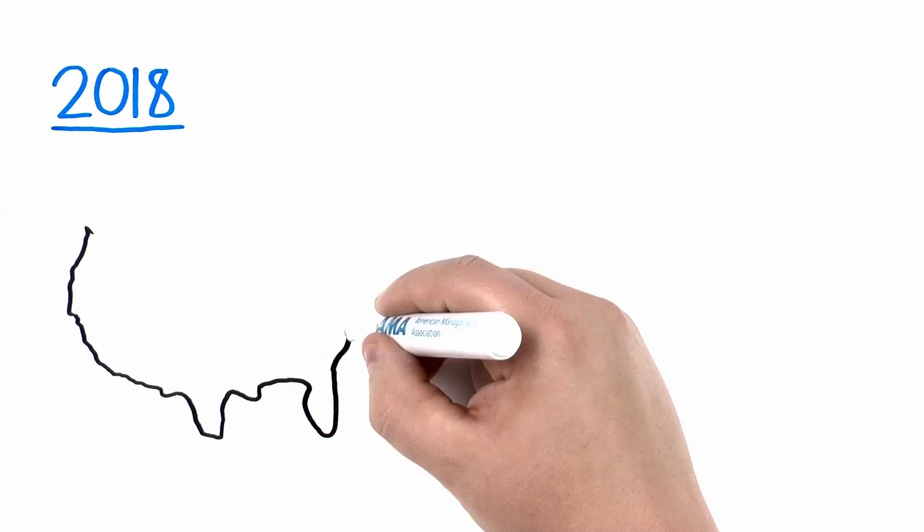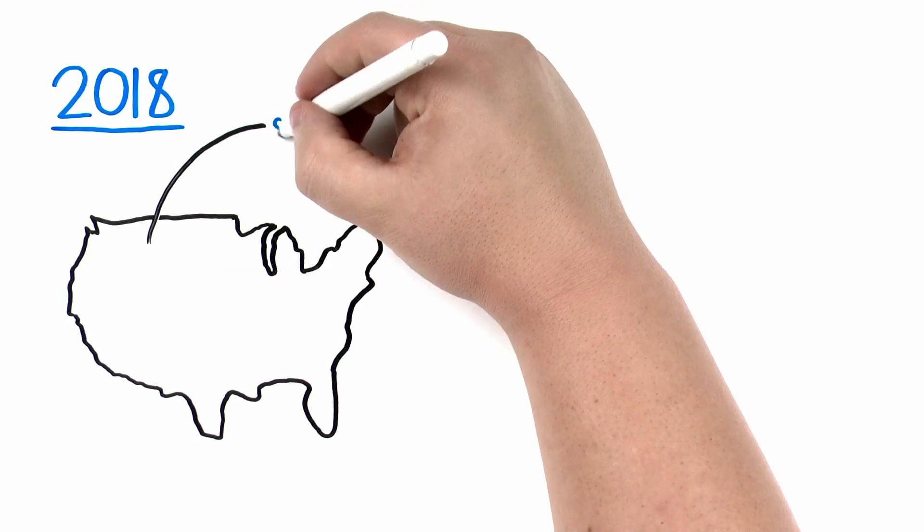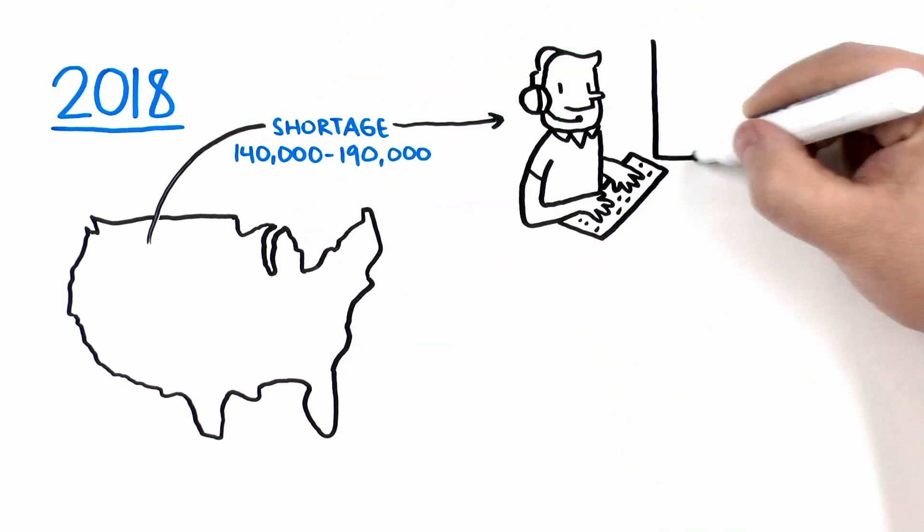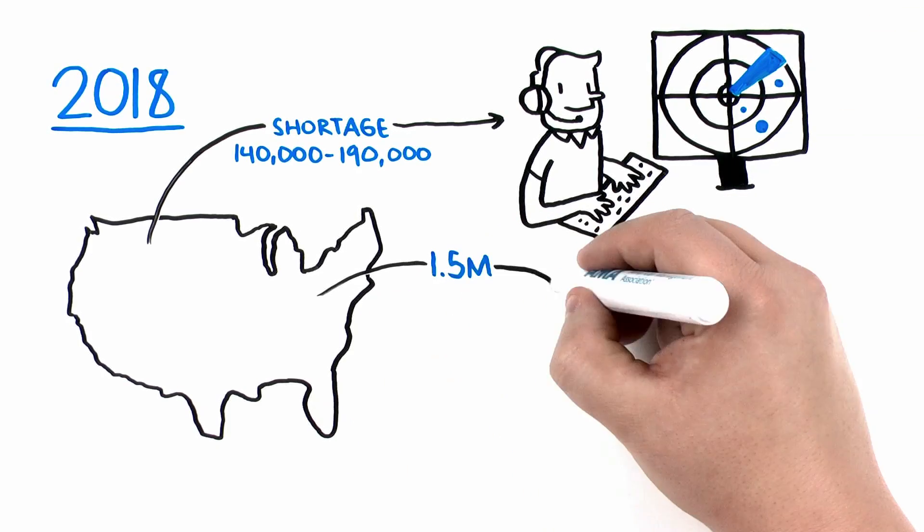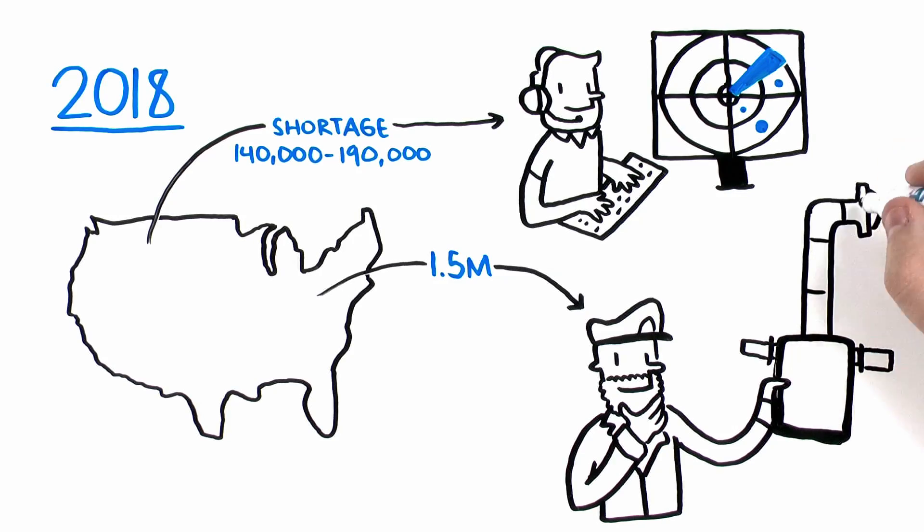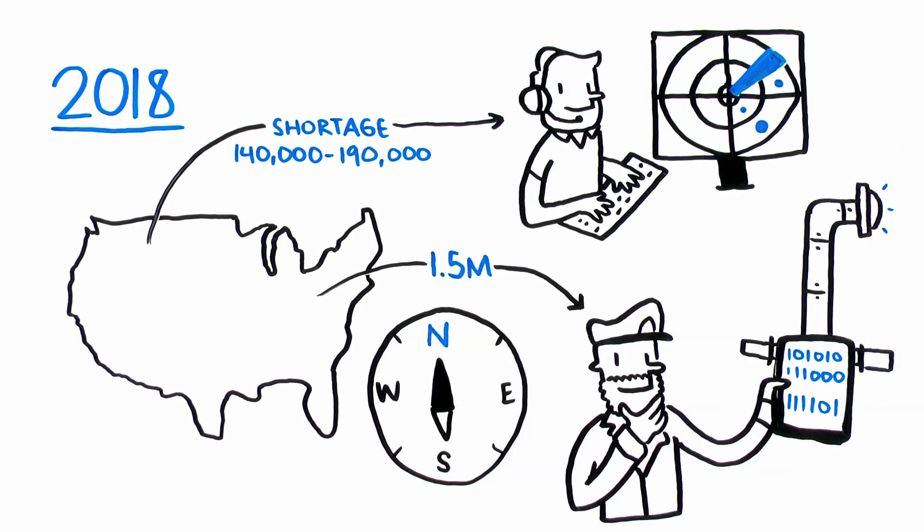By 2018, the United States alone could face a shortage of 140,000 to 190,000 people with deep analytical training and another 1.5 million people with the managerial and quantitative skills to be able to interpret and make decisions based on big data.